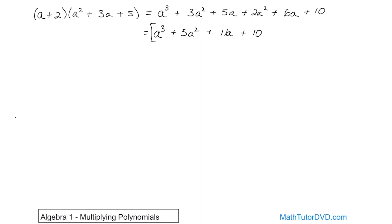Now you see why we're calling this section 'multiplying polynomials.' Here I have 2 terms times 3 terms, but I could have 2 terms times 4 terms. If there were a 4th term, a would just get distributed to everything including that 4th term. It's the same general pattern — you can multiply any 2 polynomials together using this technique.